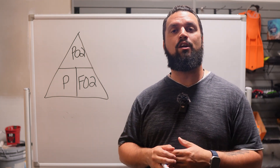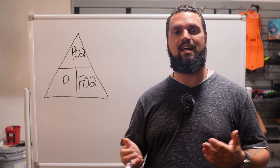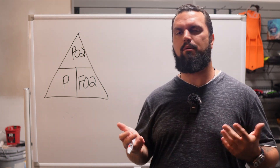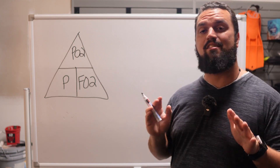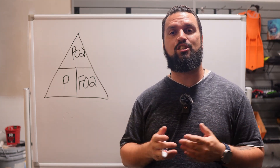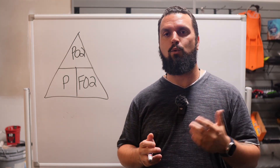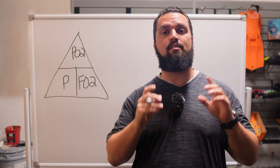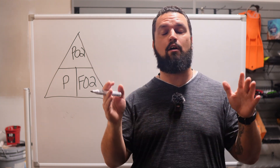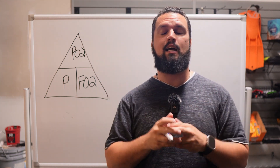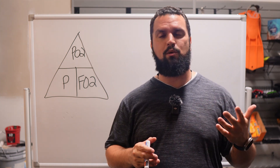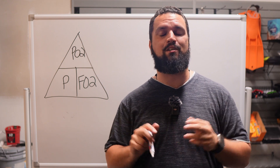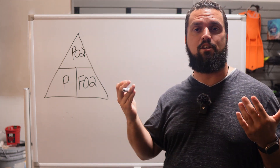I've moved out to the garage where I have a whiteboard so we can calculate our max operating depth or MOD. For this example let's calculate 32% nitrox, which is a pretty common blend. As divers we are told that our partial pressure of oxygen should be no higher than 1.4 to make sure we don't suffer from CNS oxygen toxicity. I prefer to break the formula into steps rather than one big formula, though I'll show you both.